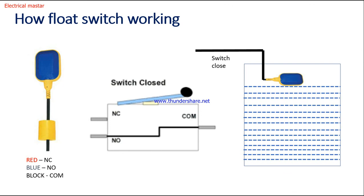See this picture — this is the float switch. Normally this float switch comes with three wire terminals: the red wire is used for the normally closed contact, the blue wire terminal is used for the normally open contact, and the black wire terminal is used for the common supply. See this is the pin diagram of the float switch.